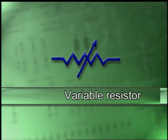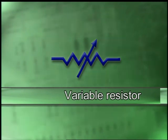Variable resistors, or resistors that vary resistance in response to a change in conditions, are shown as the symbol for a resistor inside a rectangular box. A diagonal arrow through the resistor indicates that resistance increases from low to high through the resistor.